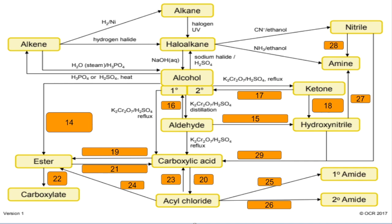Number fourteen: alcohol to ester — you can either use a carboxylic acid with a concentrated sulfuric acid catalyst and heat, or you can use an acid anhydride. Number fifteen: aldehyde to hydroxynitrile — sodium cyanide and aqueous acid. Number sixteen: aldehyde to primary alcohol — reduce this with sodium borohydride, NaBH₄.